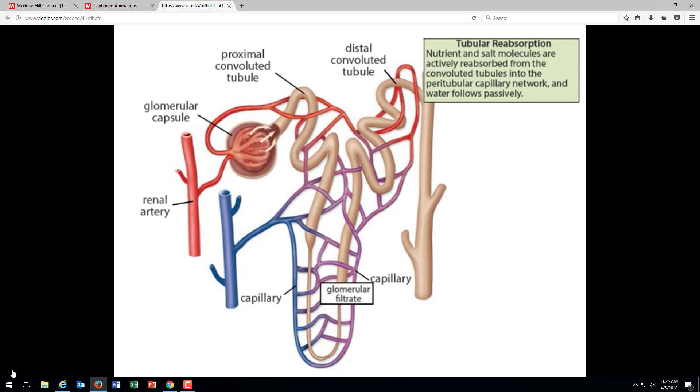As the filtrate enters the distal convoluted tubule, carrier proteins in the wall of the tubule actively transport glucose and some amino acids back into the capillary. Normally, these carrier proteins are very efficient, so glucose should not be detected in the urine. However, in the case of diabetes, these proteins cannot handle the large amount of glucose in the filtrate and some is excreted in the urine.